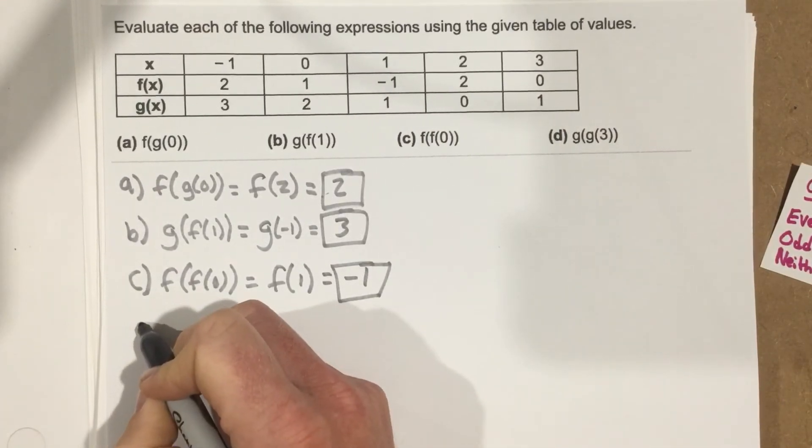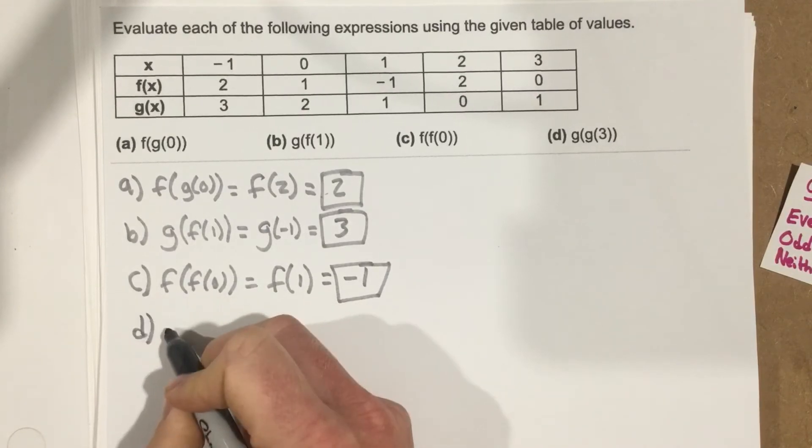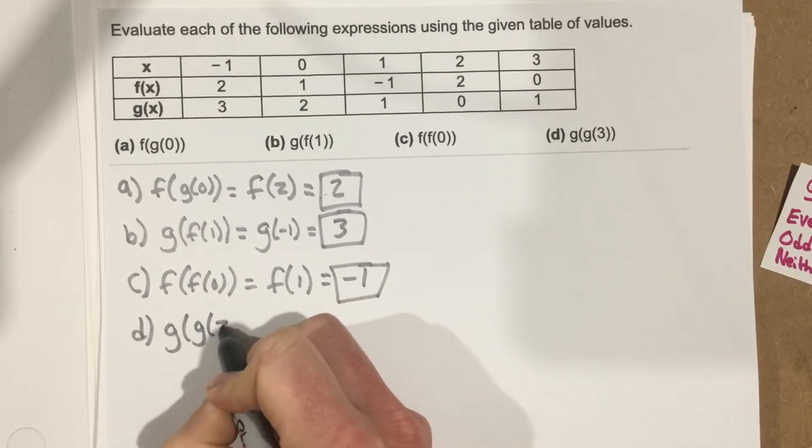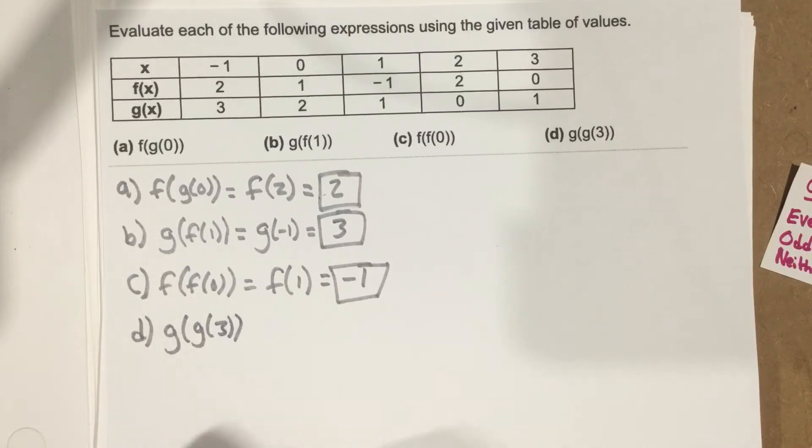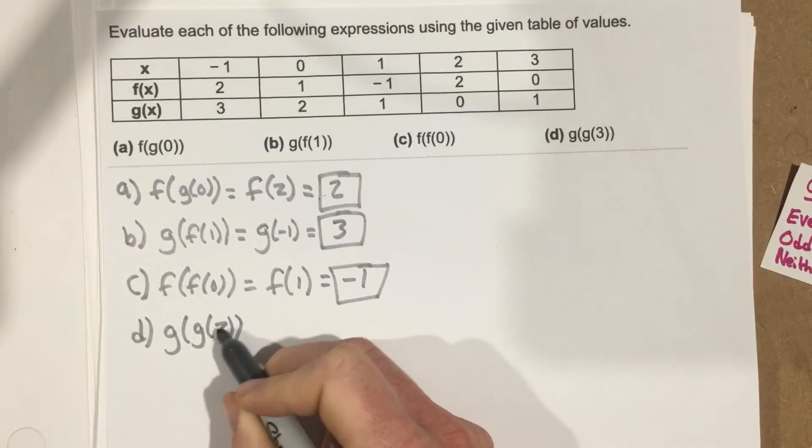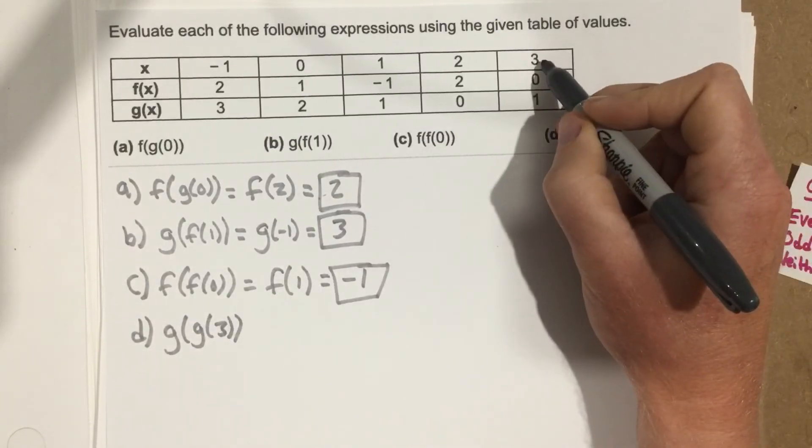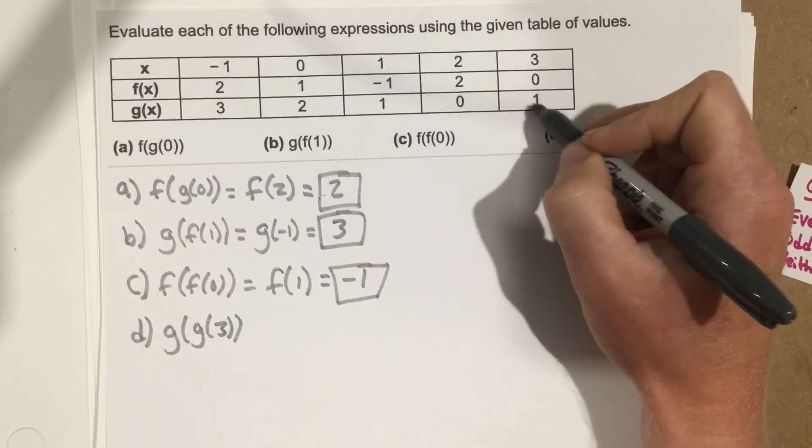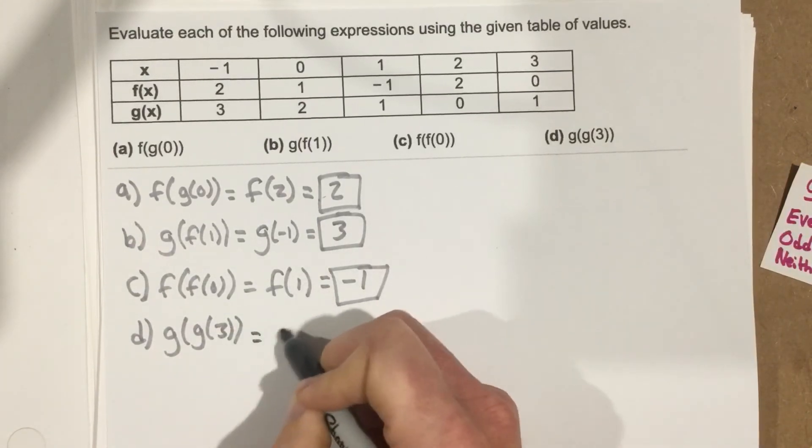And finally, I go to part D and g of g of 3. I go to the x value of 3, and I see that the g function outputs a 1. So I end up with g of 1.